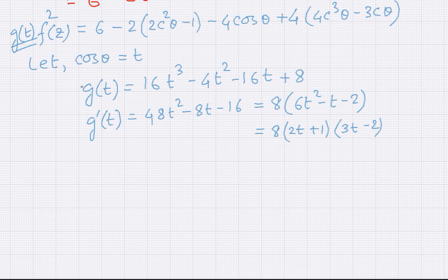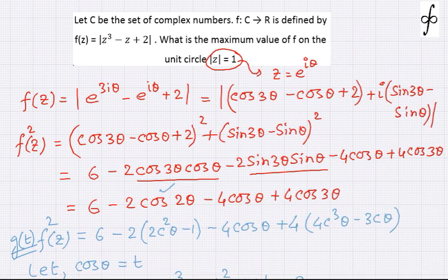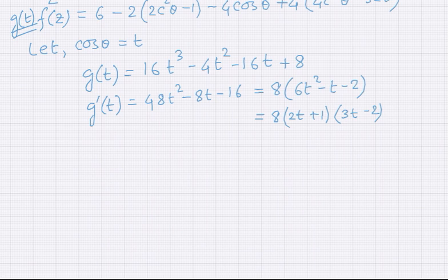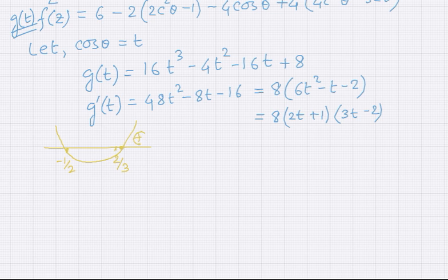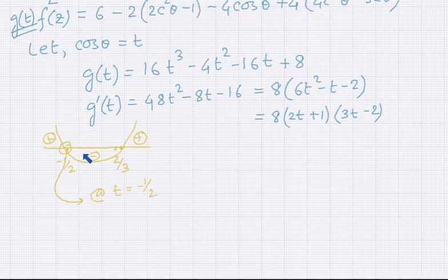So the derivative g'(t) = 8(2t + 1)(3t − 2). To find the maximum value of g(t), the derivative should change its sign from positive to negative. Using the wavy curve of this derivative, the critical points are t = 2/3 and t = −1/2, and the sign pattern is positive, negative, positive. We can easily see that at t = −1/2, the derivative changes from positive to negative, indicating a local maximum.